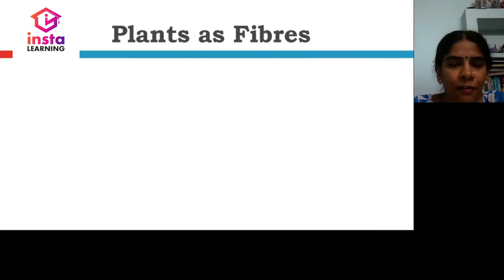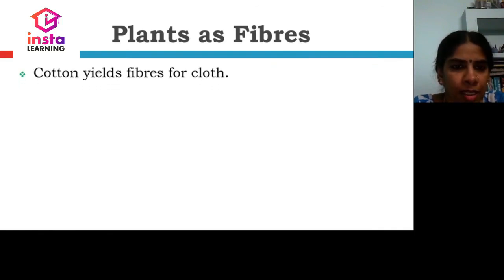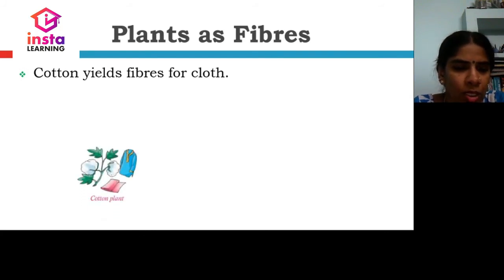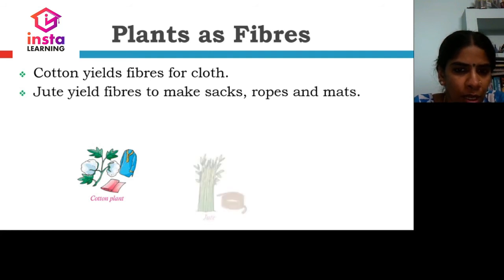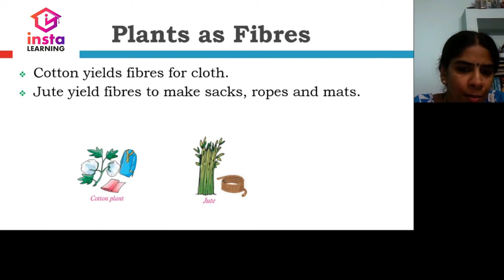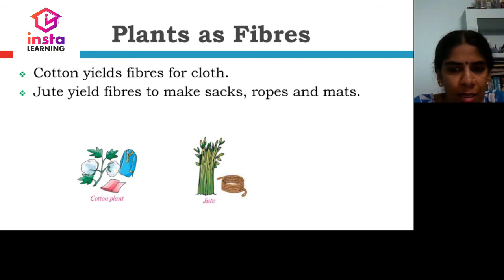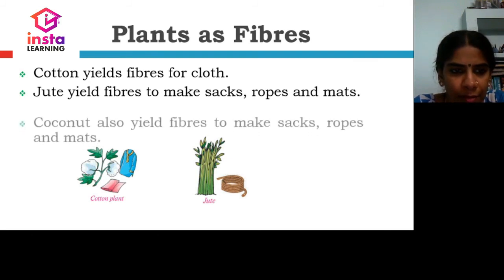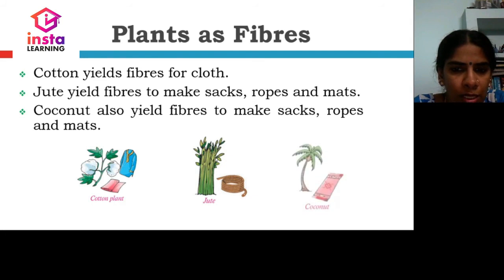Plants as fibers. The cotton plant yields fibers for cloth. It is made into fiber, and from the fiber we get cloth. Jute yields fibers to make sacks, ropes, and mats. You can see the jute plant giving fibers that can be used to make ropes, mats, sacks, etc. Coconut also yields fibers to make sacks, ropes, and mats.